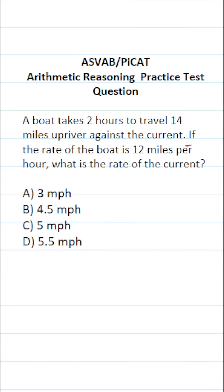This arithmetic reasoning practice test question for the ASVAB and PiCAT says a boat takes two hours to travel 14 miles upriver against the current. If the rate of the boat is 12 miles per hour, what is the rate of the current?